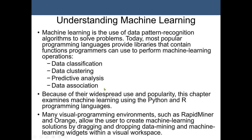Data association is finding the association or relationship between two or more variables. For example, if a customer buys peanut butter, what is the chance they may also buy bread? In data association algorithms we use something called confidence and support levels — these are two threshold values used to determine the strength of the association relationship.